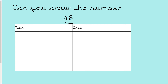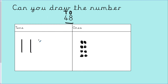Let's look at the next number — forty-eight. Tens and ones. Please pause the video here and have a go. Let's look at the ones — how many ones are in forty-eight? Eight ones. Let's draw them: one, two, three, four, five, six, seven, eight. How many tens? Four. Ten, twenty, thirty, forty. Excellent, well done.